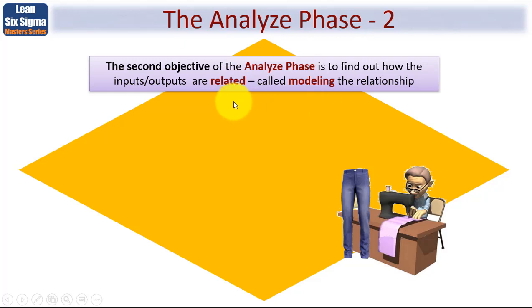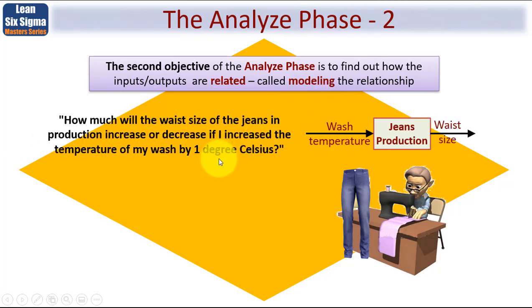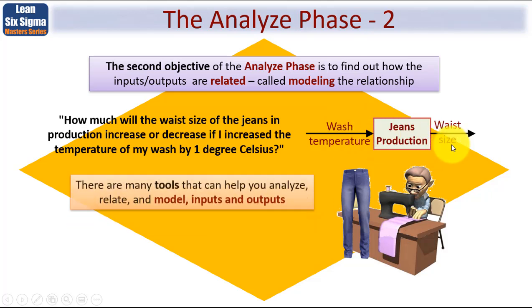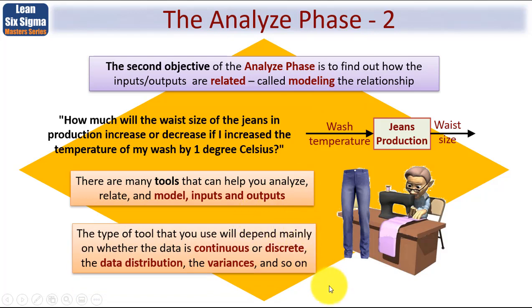The second objective within the Analyze Phase is to find out how those inputs and outputs are related — this is called modeling the relationship. For example: how much will the waist size of jeans in production increase or decrease if I increase the temperature of my wash by one degree Celsius? The wash temperature is the input and the waist size is the output. The type of tool you use will depend mainly on whether the data is continuous or discrete, and what the data distribution and variances are.